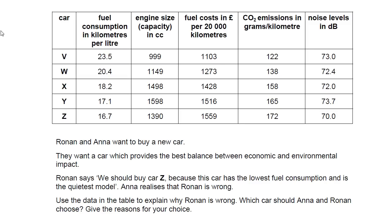It's a three mark question. Explain why Ronan is wrong — that's your first mark. Which car should they choose — that's your second mark, and give the reasons. One reason is going to be economic and the next reason is going to be environmental. So that's three marks. Have a little go at that.